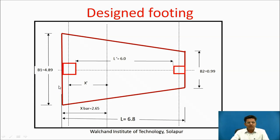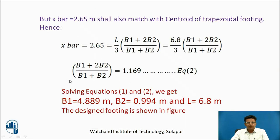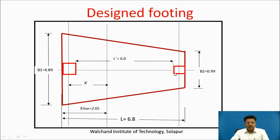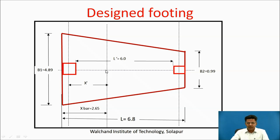These values can be observed in the designed footing: B1 = 4.89 m (the larger side), B2 = 0.99 m (the smaller side), and the length of footing is 6.8 m. The centroid of the trapezoidal footing coincides with the resultant of forces passing through the centers of both columns, and hence it will give uniform pressure on this trapezoidal footing.